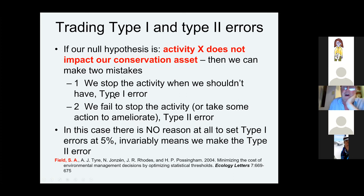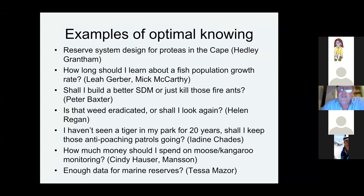So bottom line, message number two: if you're into optimal monitoring, you can actually optimize it — but don't always set the type one error at five percent. I'm going to tell a couple of stories about how we think about optimal knowing, or optimal knowledge gain.